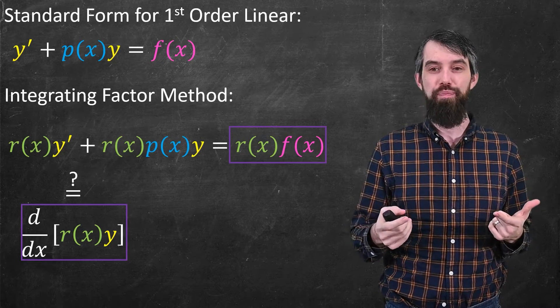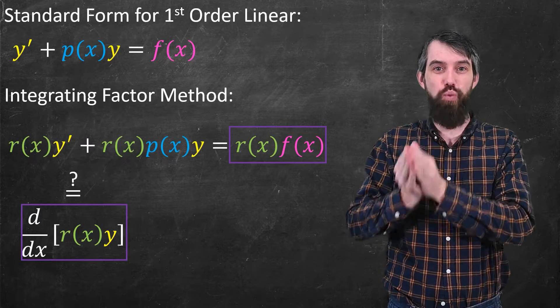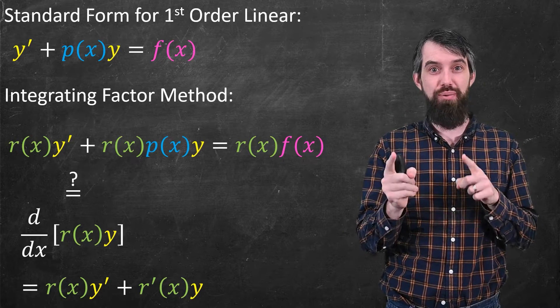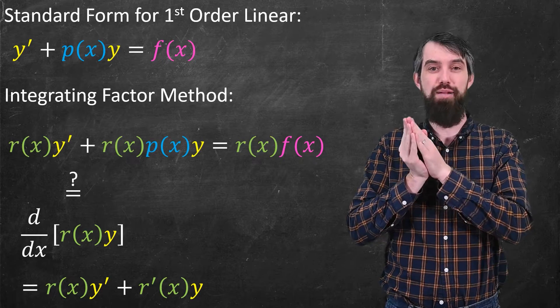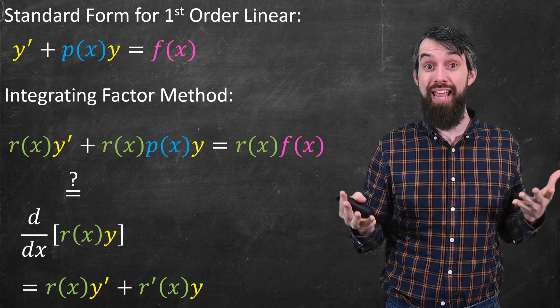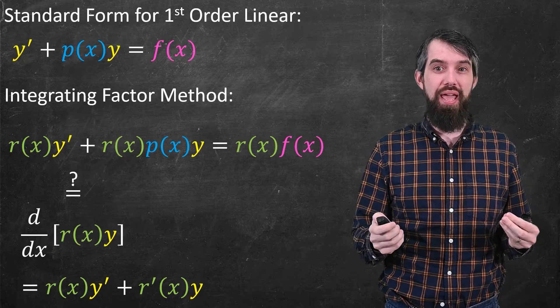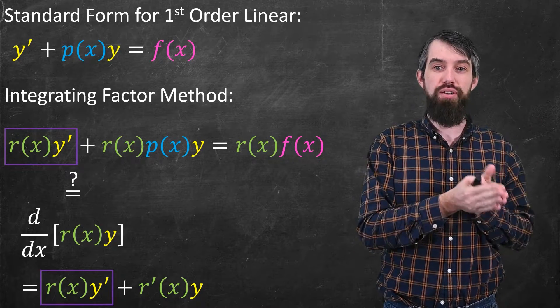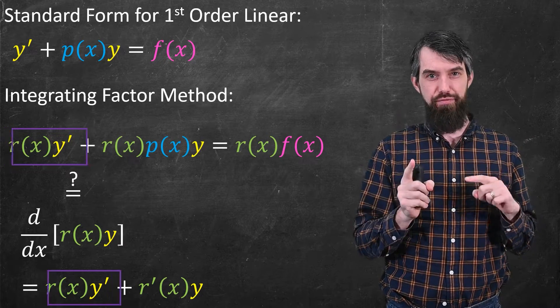Well, if I could write it in this way as the derivative of r(x) times y, that's the derivative of a product, and we would have the product rule. So let me expand out the product rule. It would say r(x) times y' plus r'(x) times y. That would be what we'd get. Now if I compare what I want to what we have, well, there's a first term that's identical for both of them, the r times the y'. That's the same, okay, looking pretty good. But the second term is quite different.